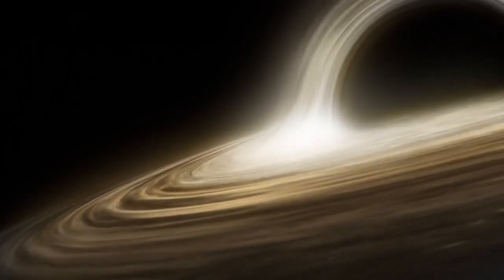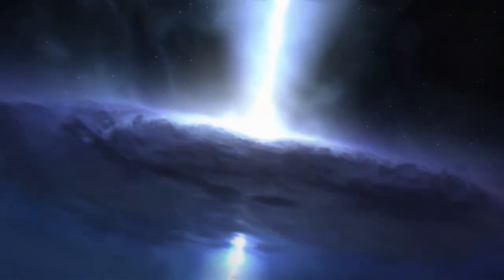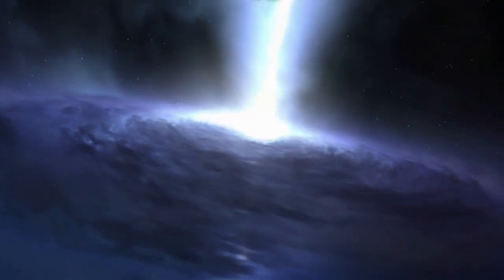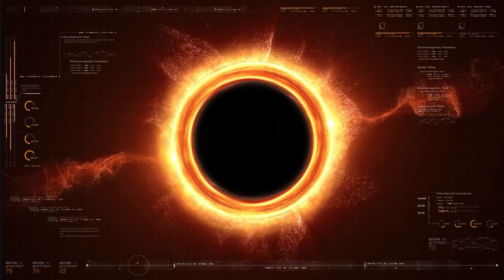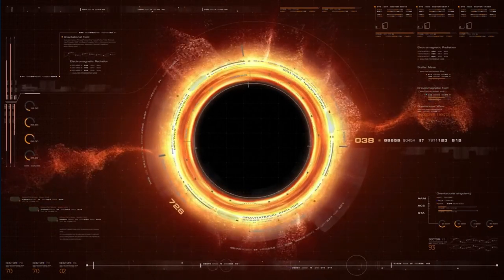As gas and dust slowly accrete onto a black hole's surrounding hot disk-like environment, they emit electromagnetic radiation across the spectrum.